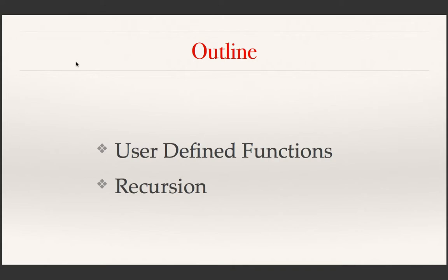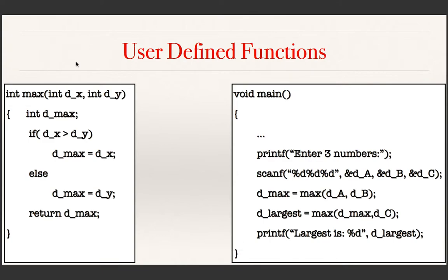After that we will be discussing about a special kind of user defined function known as recursion. See this program — there are two functions, main and max, where max is a user defined function to find the maximum of two integers. Main first reads three numbers from the user, finds the maximum of two numbers and assigns the result in dMax, then max is again used to find the maximum of the current max and C, so the largest is obtained and stored in dLargest, and finally it prints dLargest.